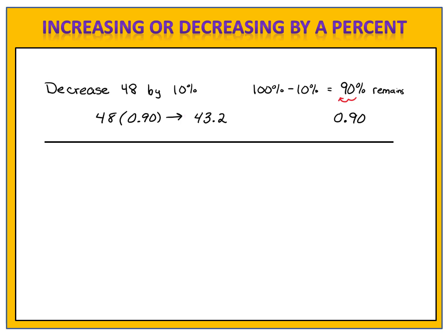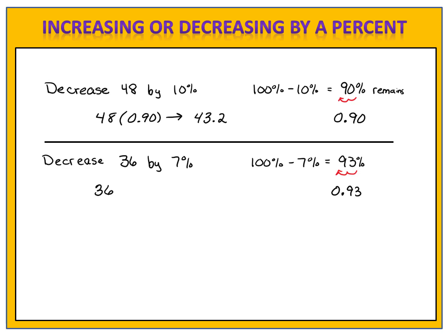Here's one for you to try: can you decrease 36 by 7%? We had 100% of something and took 7% away, which means 93% remains. Convert that to a decimal: 0.93. We take 36 times 0.93 and find the result of 33.48. This is the amount that we have left when 36 is decreased by 7%.